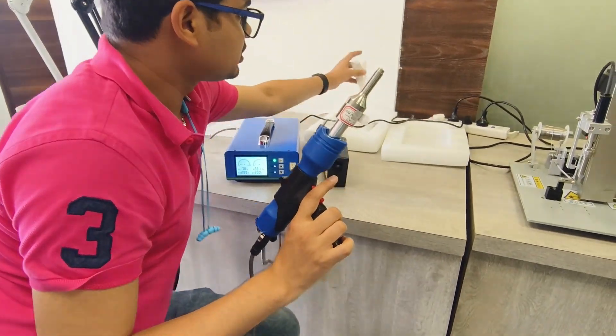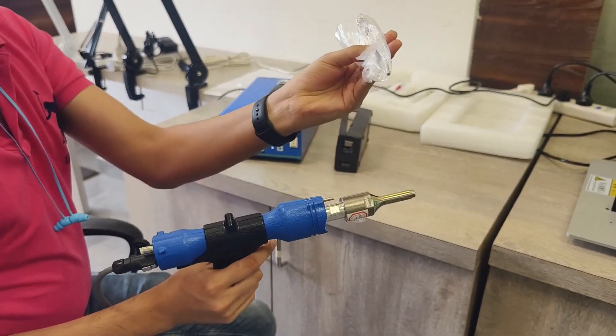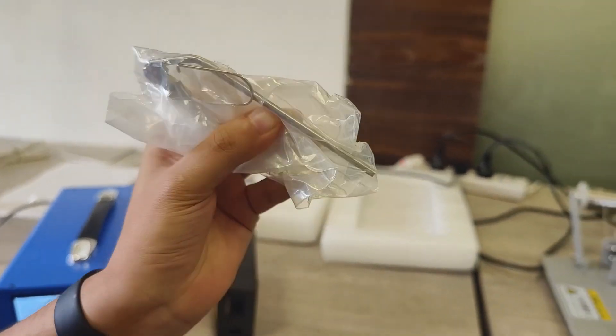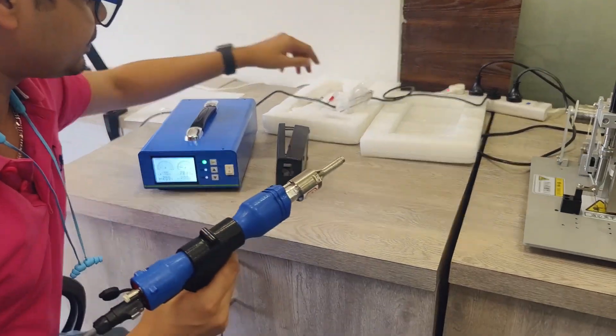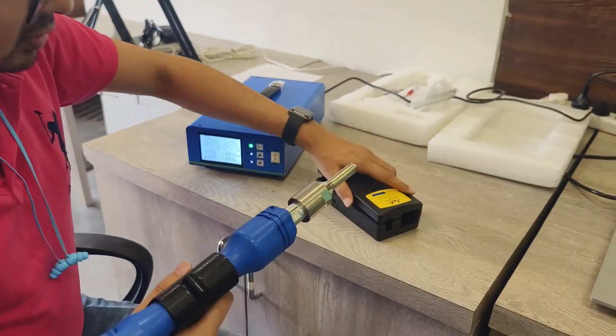There are a few nozzles that come with the welding machine for cooling. Now I will show you how it is working. For example, this is a plastic part.